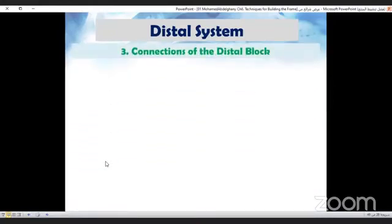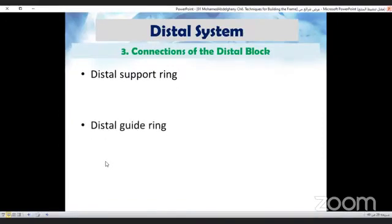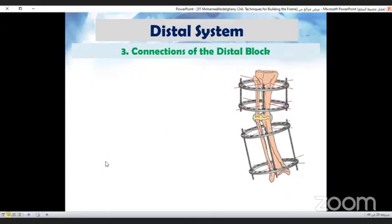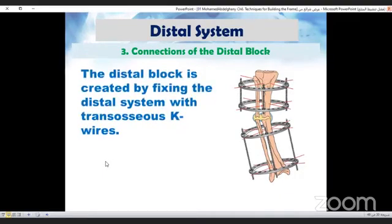Now we come to the connections of the distal block. If we connect the distal support ring and the distal guide ring with three or four threaded rods, we now get the distal system. Finally, the distal block is created by fixing the distal system with transosseous K wires.